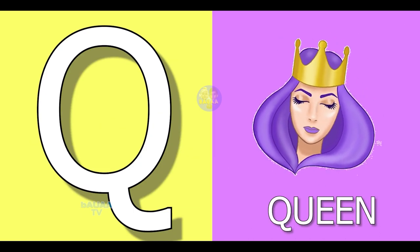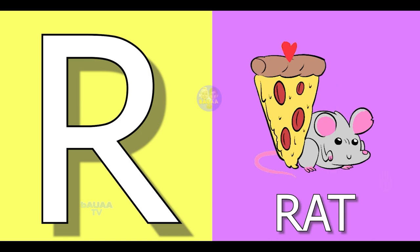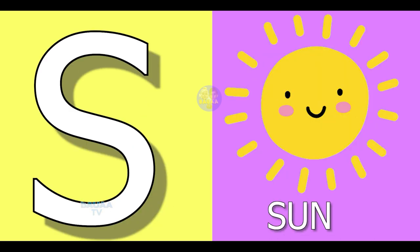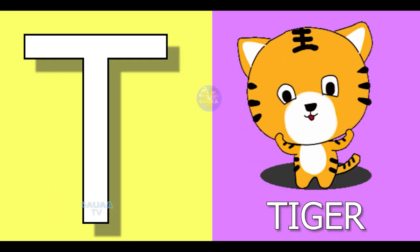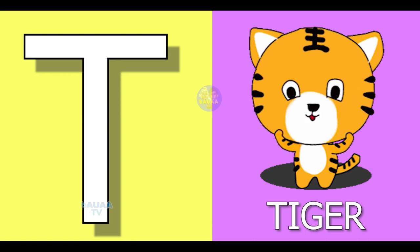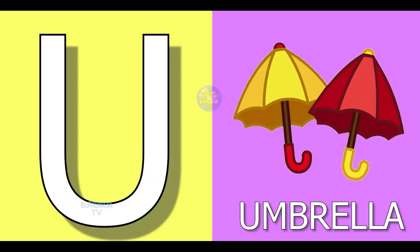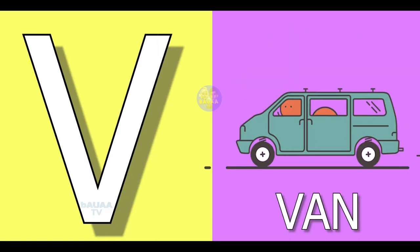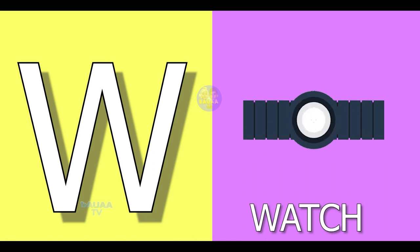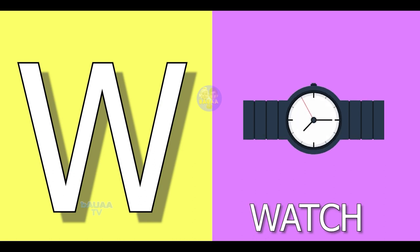Q for queen, R for red, S for sun, T for tiger, U for umbrella, V for wind, W for watch.